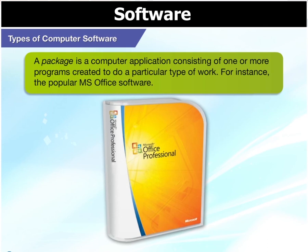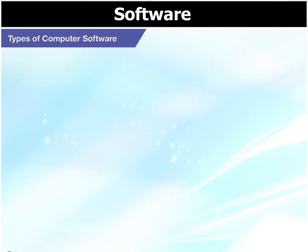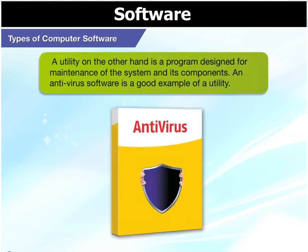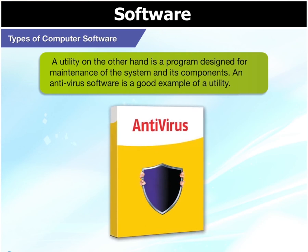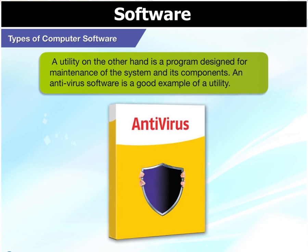What is a utility? A utility, on the other hand, is a program designed for maintenance of the system and its components. An antivirus software is a good example of a utility.